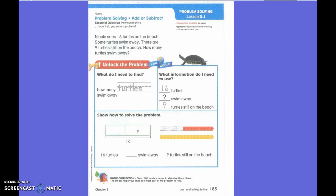So if I look at my story, what important words should I circle or number? Very good. Sixteen and nine are very important numbers.